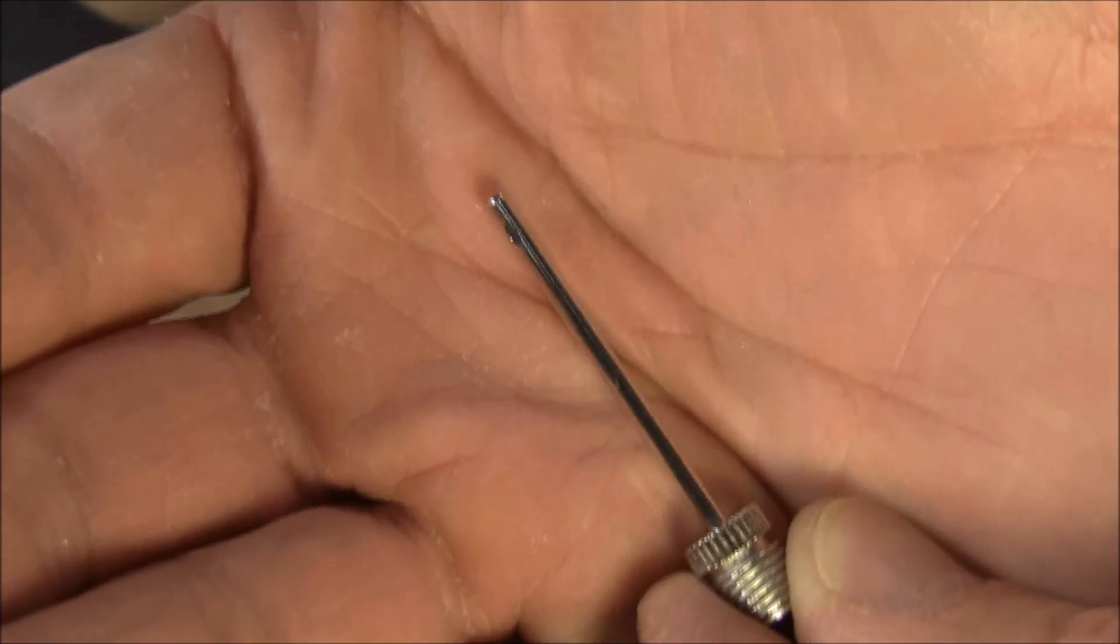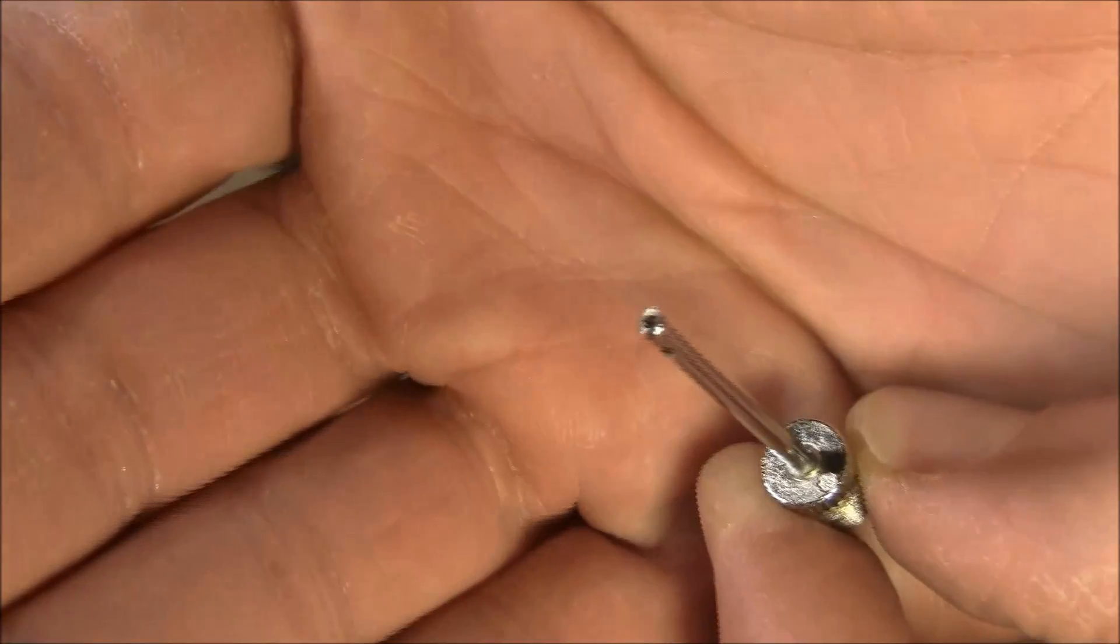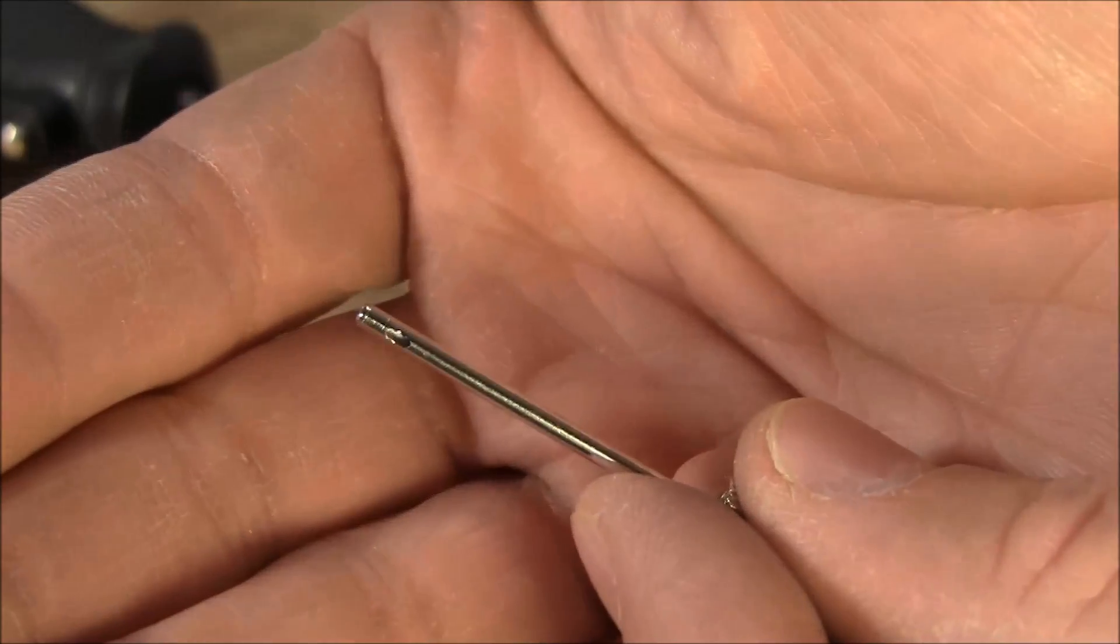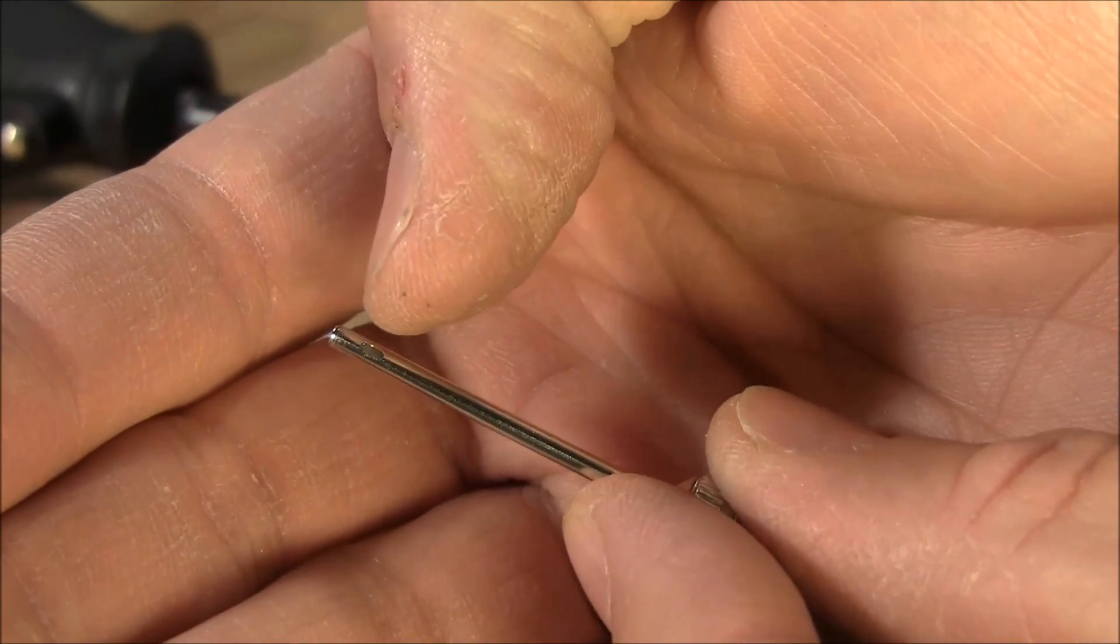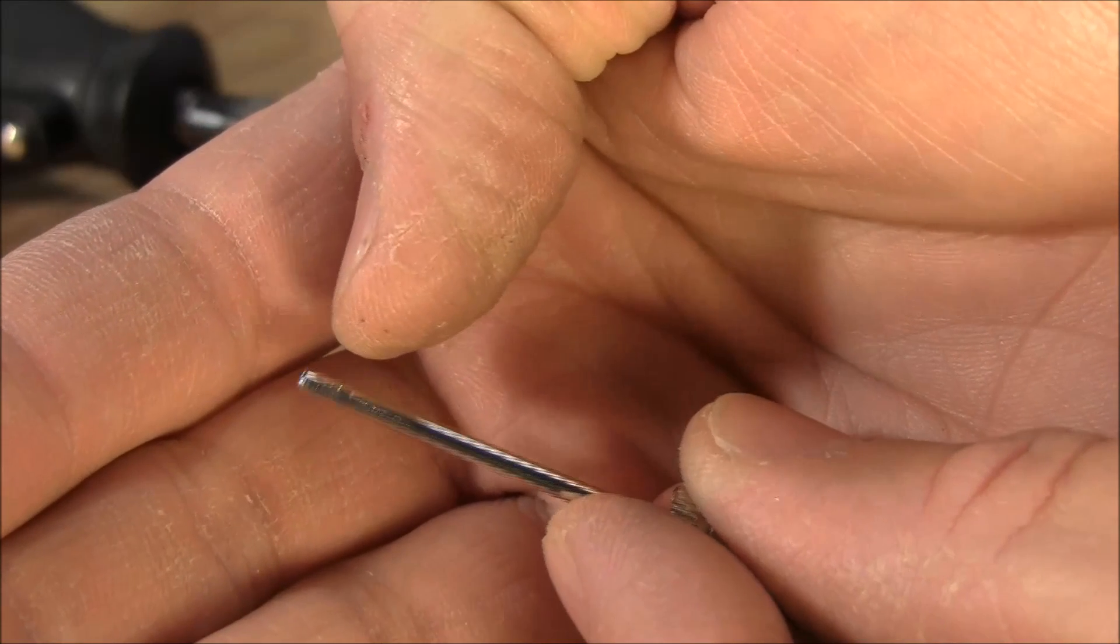This is the inflator needle we're going to use. In addition to the hole at the very tip of the needle, there's also a small hole on the side of the needle. We're going to make a cut with a dremel, just below or above that hole on the tip side.